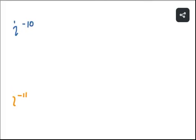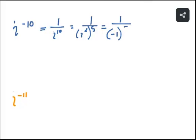For i⁻¹⁰, we write it as 1/i¹⁰, which we can write as 1/(i²)⁵, or 1/(−1)⁵ = 1/(−1) = −1. So i⁻¹⁰ = −1.